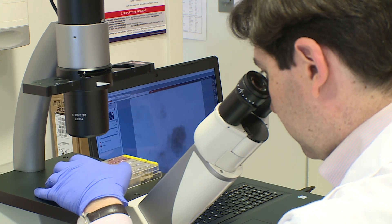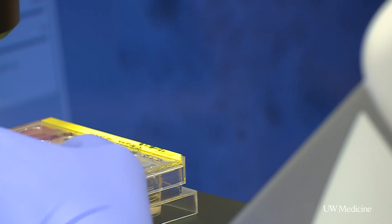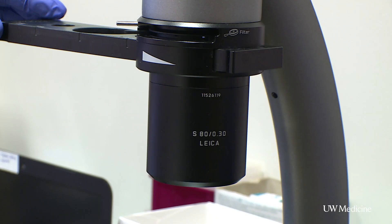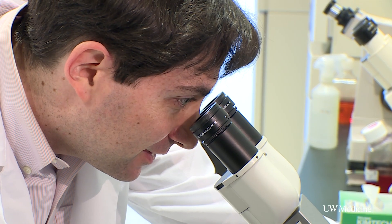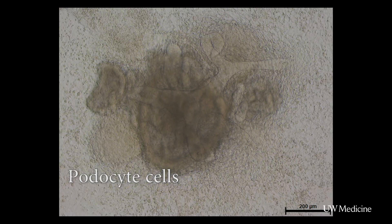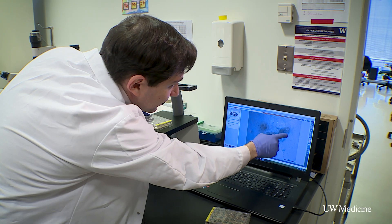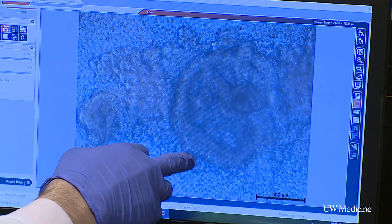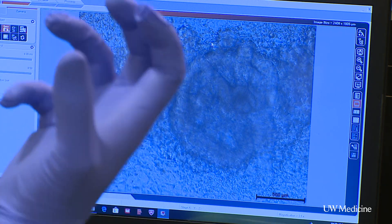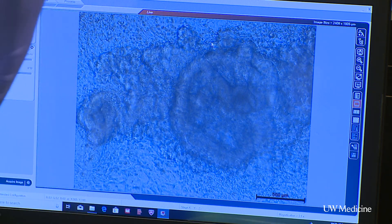We're going to be looking at these mini kidney organoids that have been grown from stem cells derived from a patient. We'll be seeing the little tiny tubules within the organoids. The podocyte cells form a round capsule at the end of the tubes — so there's the tube, and then this is the mass of podocytes that are forming the filtration barrier.